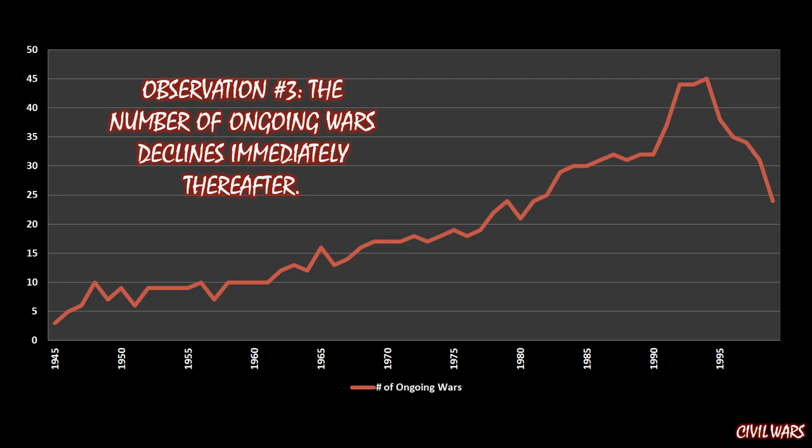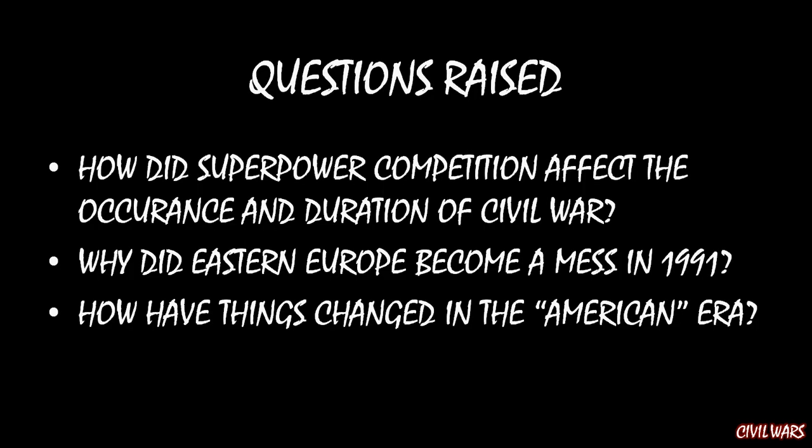In any case, that graph brings up a bunch of interesting questions — I have three of them. The first question is: how did superpower competition affect the occurrence and duration of civil war? As the United States and the Soviet Union were battling it out from 1945 to 1990 during the Cold War era, how did that affect the occurrence, timing, and length of civil wars? Second: why did Eastern Europe become a mess in 1991? When the Soviet Union crumbles, what causes all these extra wars to start? Just because a big state like the Soviet Union falls doesn't necessarily mean there had to be a whole bunch of extra wars — why wasn't that more peaceful?